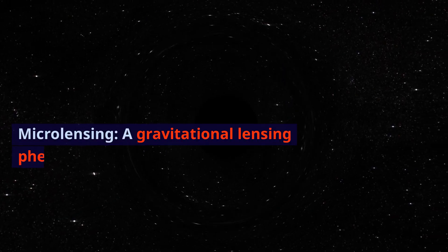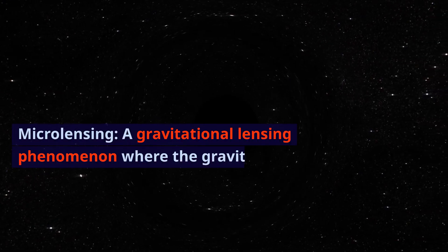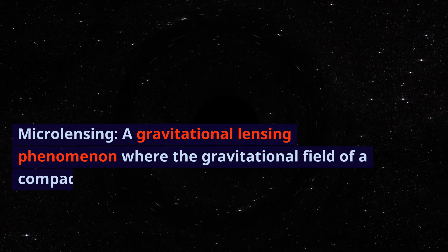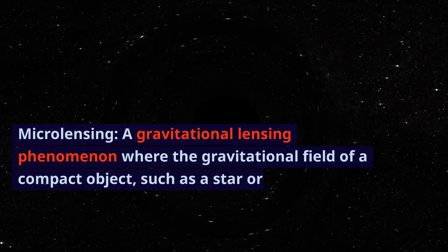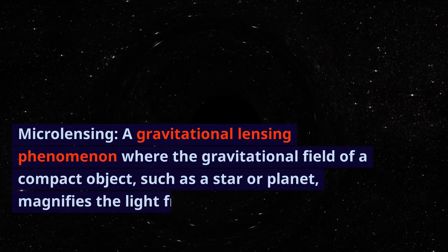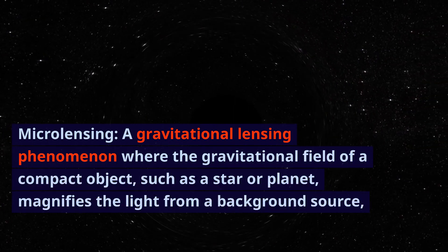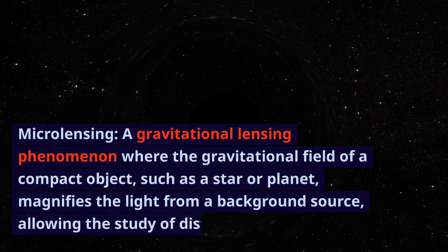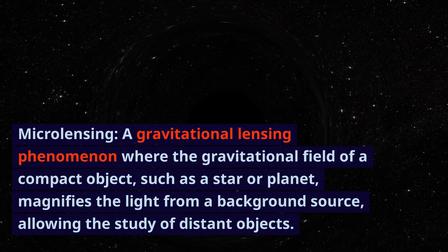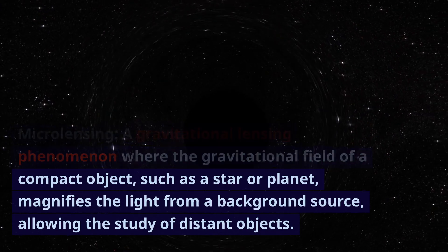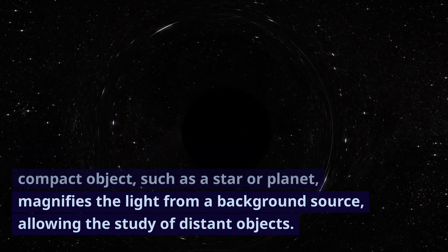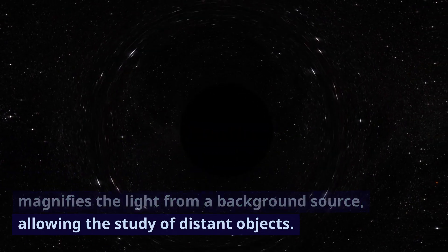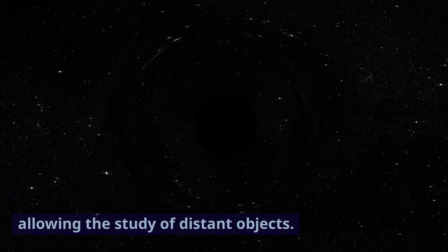Microlensing: a gravitational lensing phenomenon where the gravitational field of a compact object, such as a star or planet, magnifies the light from a background source, allowing the study of distant objects.